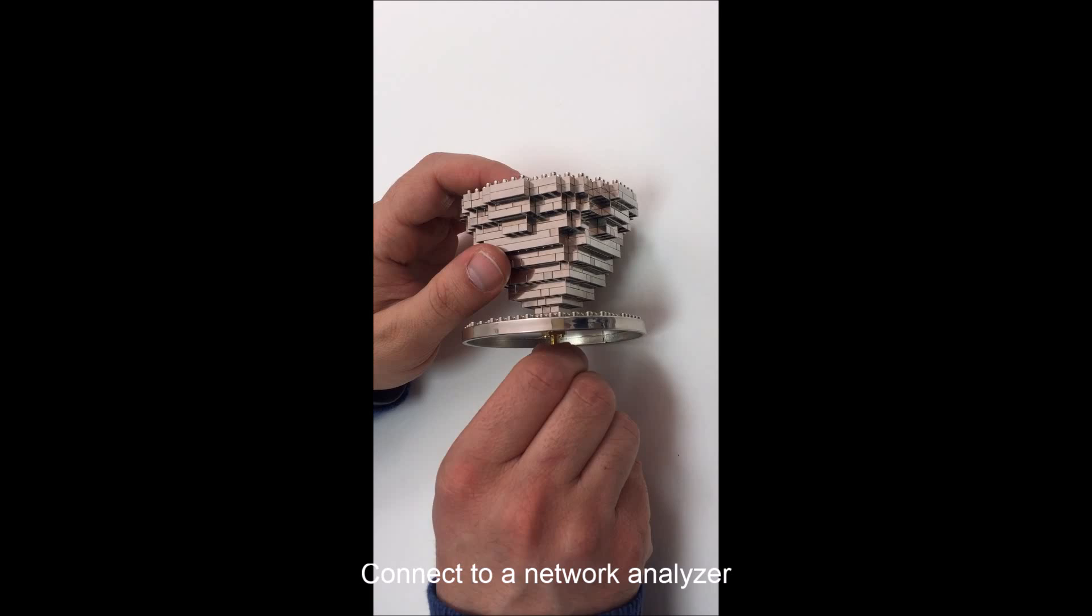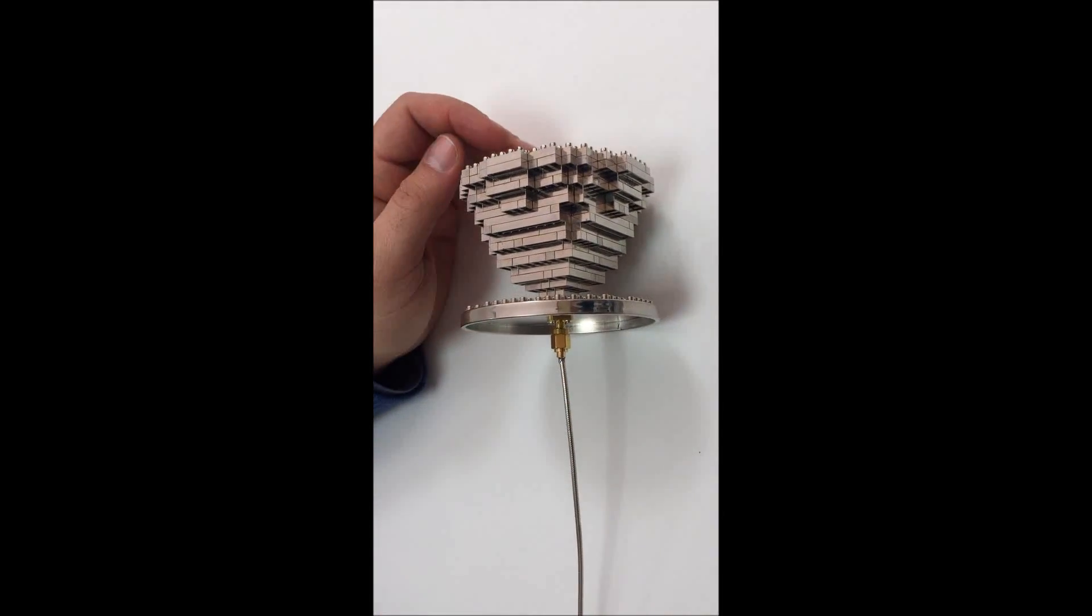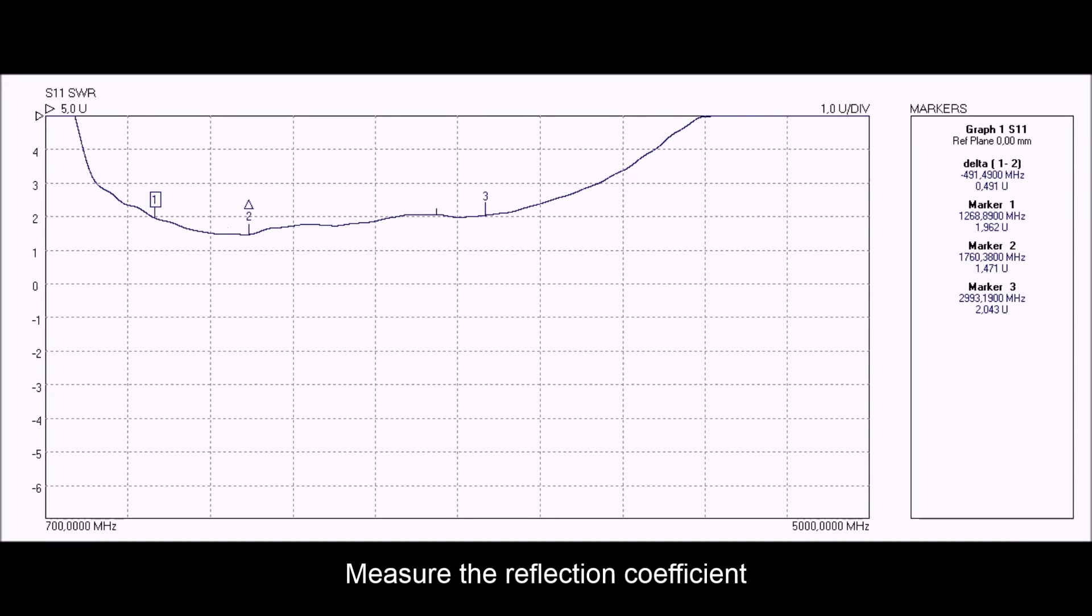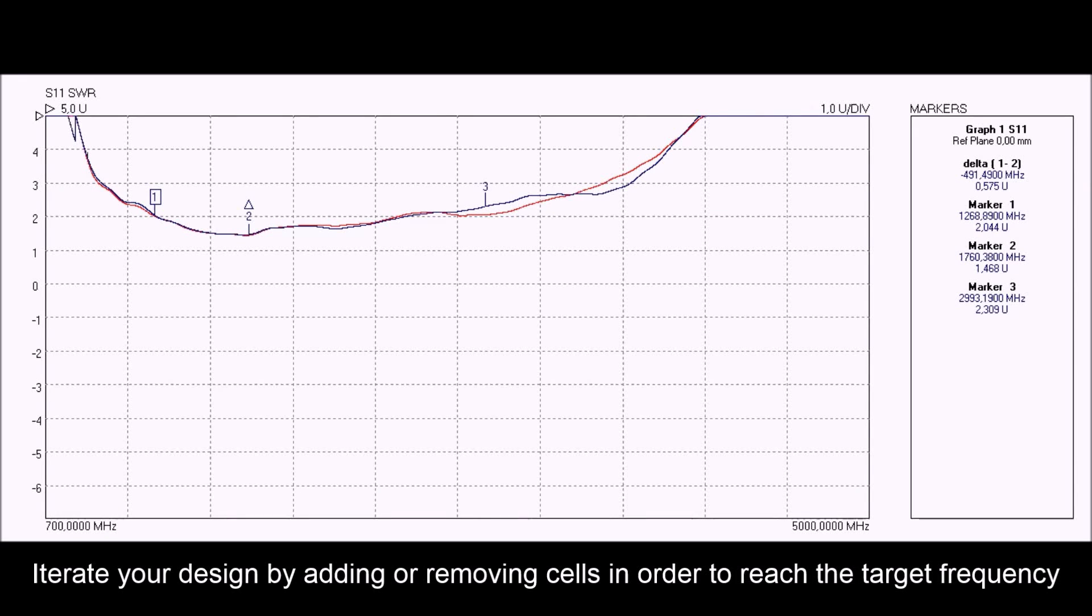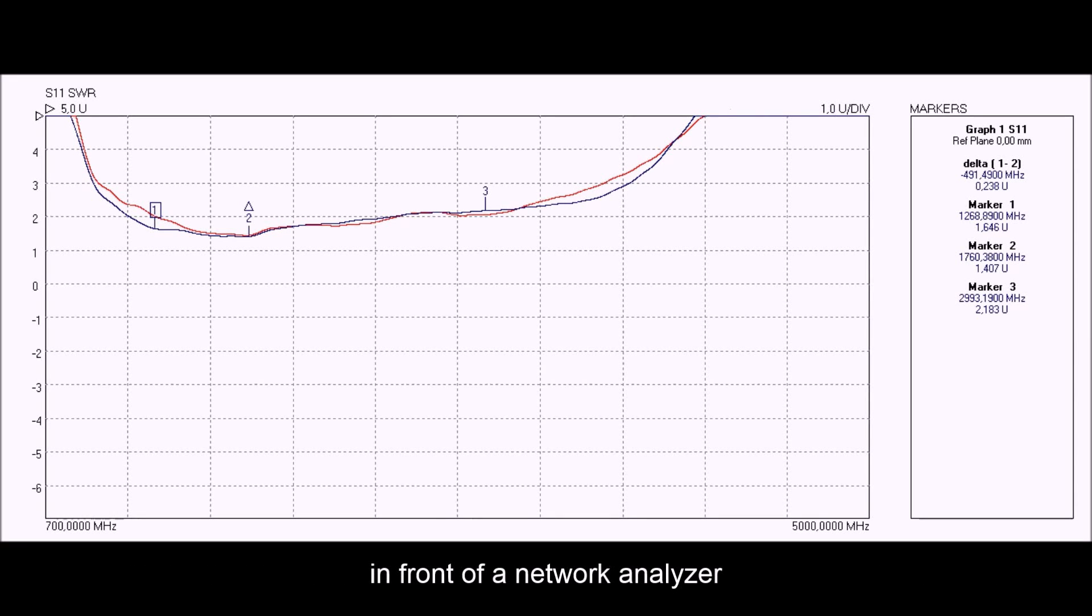Connect to a network analyzer. Measure the reflection coefficient. Iterate your design by adding or removing cells in order to reach the target frequency in front of a network analyzer.